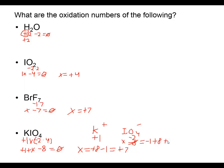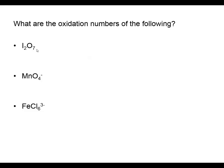Those are two different techniques - you can determine all elements simultaneously or break the ions up and do them separately. Let's look at diiodine heptoxide I₂O₇. Oxygen is a negative two with seven oxygens giving a total of negative fourteen. Since there are two iodines, I put in two x rather than just x.